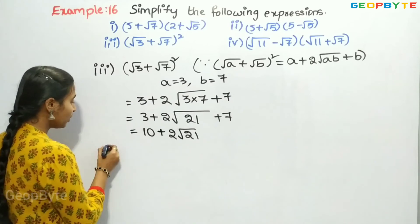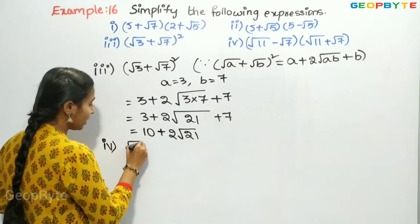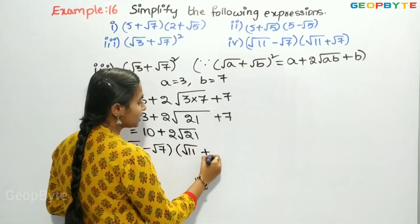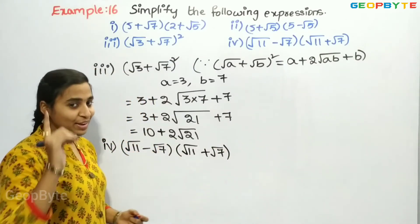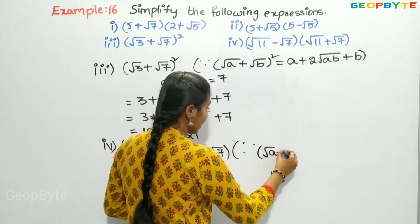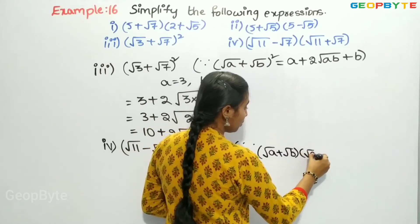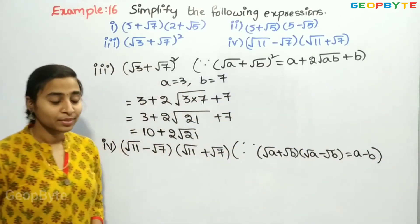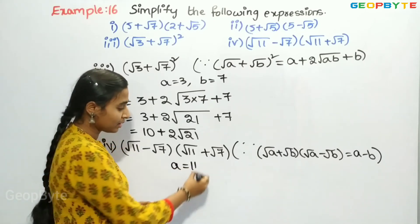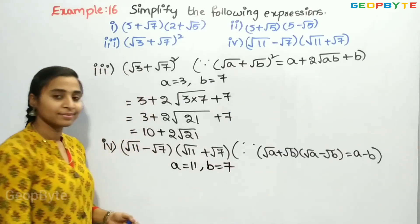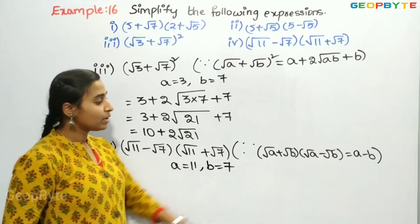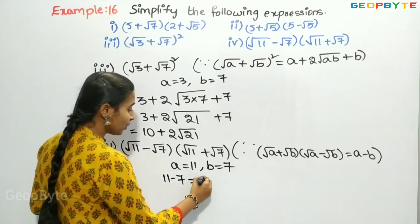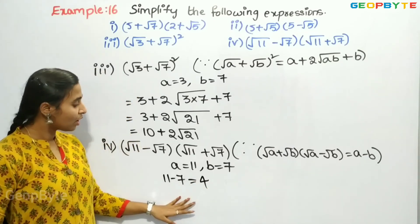The fourth expression is (root 11 − root 7)(root 11 + root 7). Using the identity (root a + root b)(root a − root b) = a − b, where a = 11 and b = 7: we get 11 − 7 = 4. So the answer for this expression is 4.